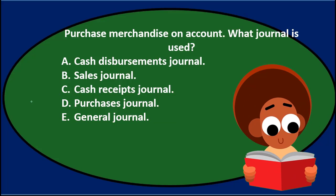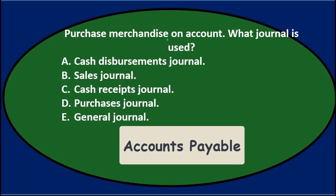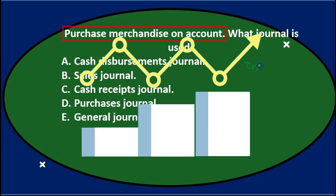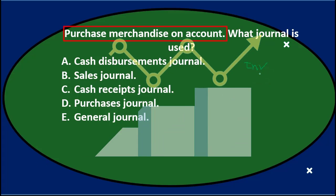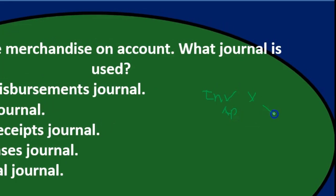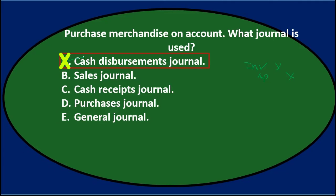We will read through these and cross them out with the process of elimination in order to get closer to the correct answer. Purchase merchandise on account — what journal is used? A. The cash disbursements journal. We purchased it on account, which usually means accounts payable. Inventory would go up, and accounts payable would be the other side of the journal entry. So there's no cash involved, so it can't be the cash disbursements journal.